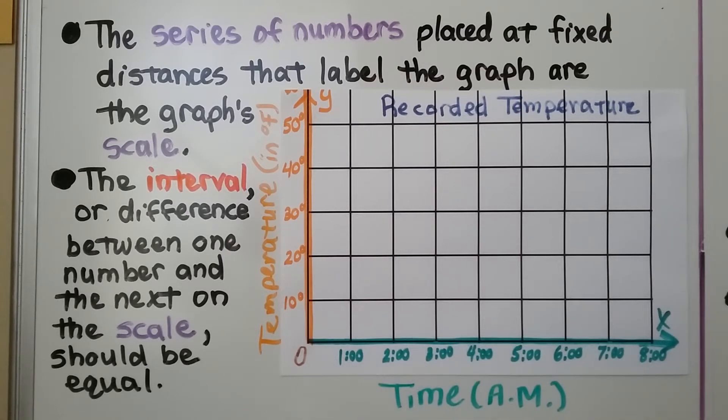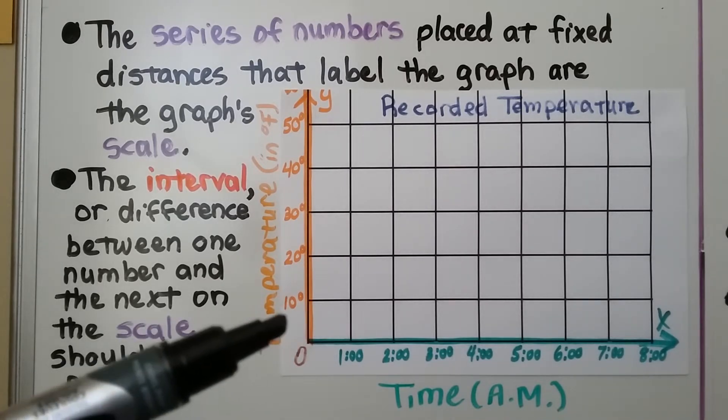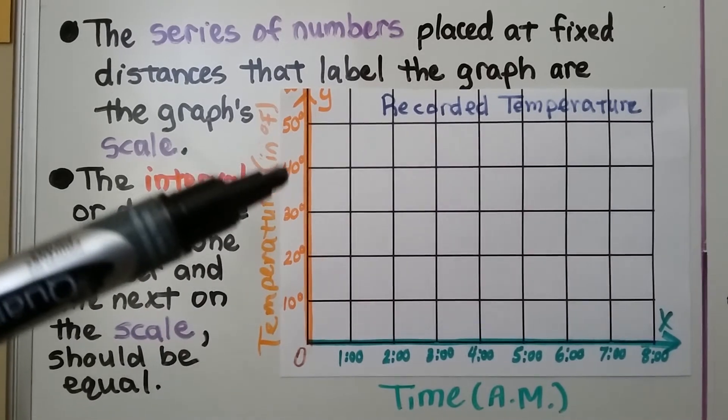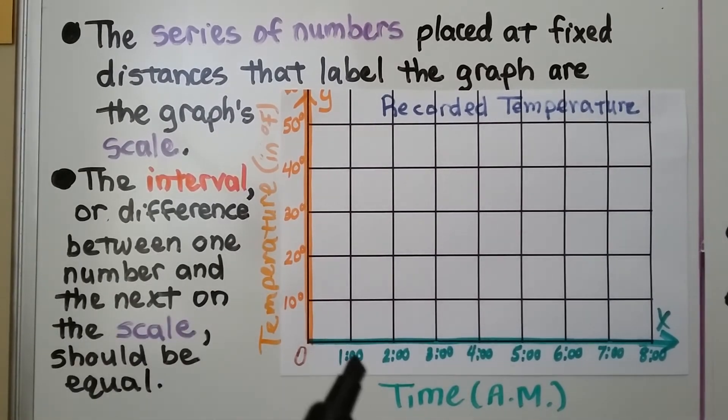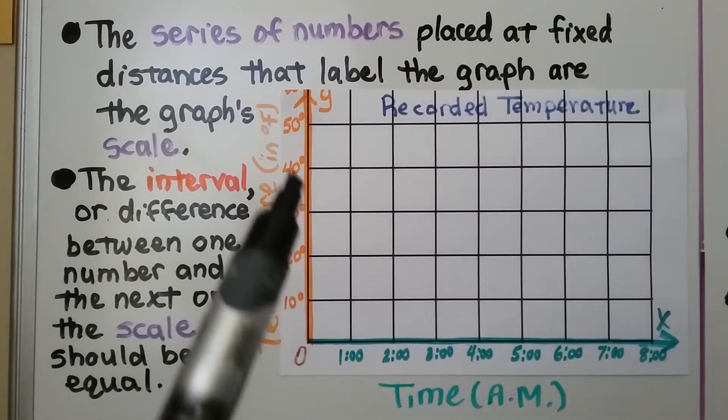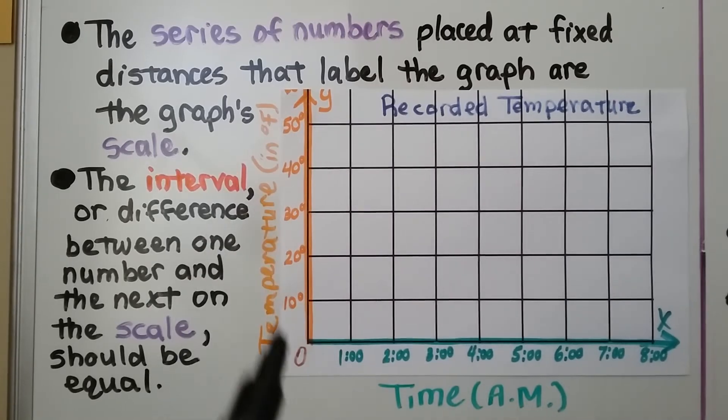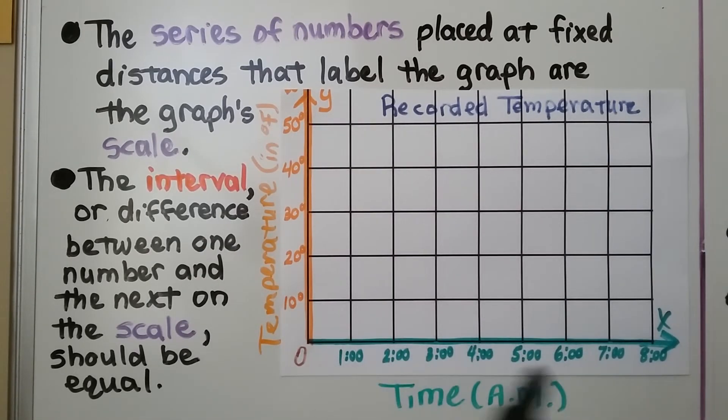The interval or difference between one number and the next on the scale should be equal. We start at zero, we go to 10, 20, 30, 40, 50, so there's a difference of 10 between each of these degrees, and here there's a difference of one hour between each of these. So the intervals have the same amount of difference between each number. See? 10 between these and one hour between these.